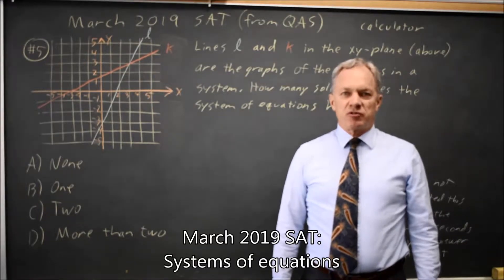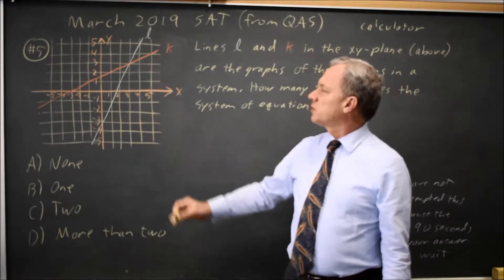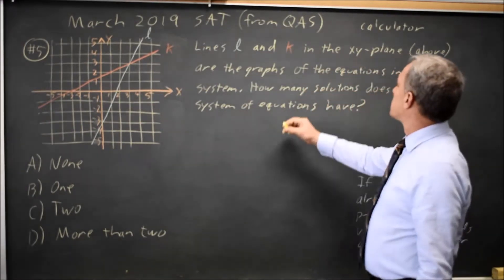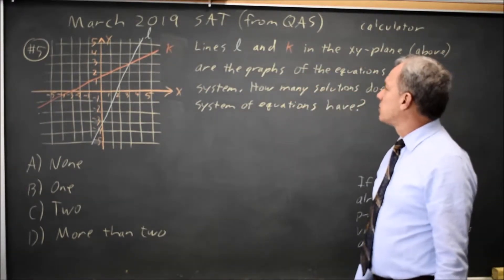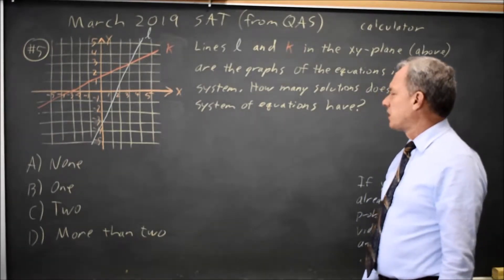This is Calculator Question Number 5 from the March 2019 SAT. College Board gives us a graph with two lines. They tell us that the lines are the graphs of the equations in a system. They ask how many solutions the system of equations has.